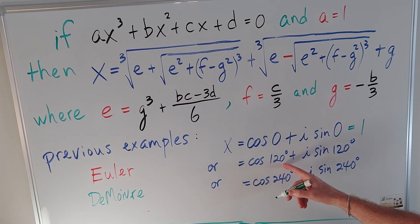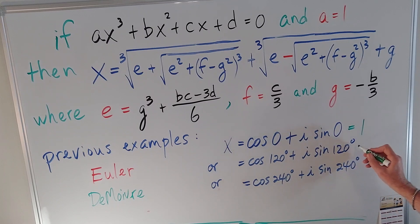And then cos(120°) is the same as negative cos(60°) so that's -1/2, and sine(120°) is the sine(60°) so plus i√3/2, just as we found earlier by using the quadratic formula.